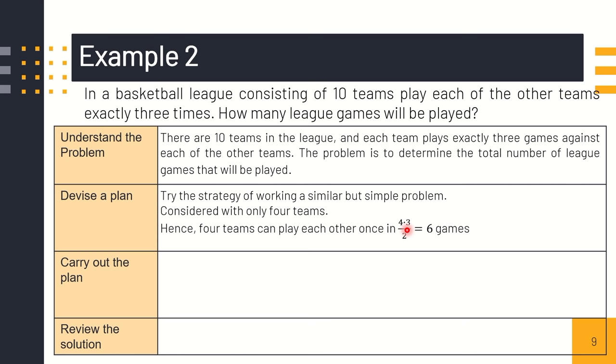However, we have a representation here. However, the diagram shows only six line segments. It appears that our procedure has counted each game twice. For instance, when team A plays team B, that's also B plays team A. So it's only one game. To produce the correct result, we must divide our previous result. Since there are four teams, multiply it by three.